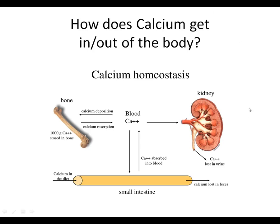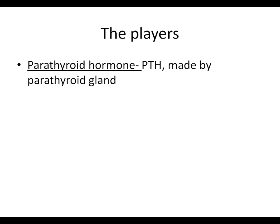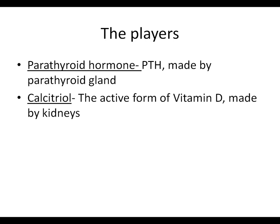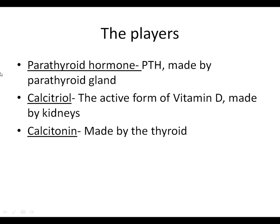When talking about calcium homeostasis, all three of these mechanisms for changing blood calcium levels come into play. The balance of calcium levels in the blood is maintained by three different hormones: parathyroid hormone, calcitriol, and calcitonin. Parathyroid hormone is made by the parathyroid gland and is abbreviated PTH.